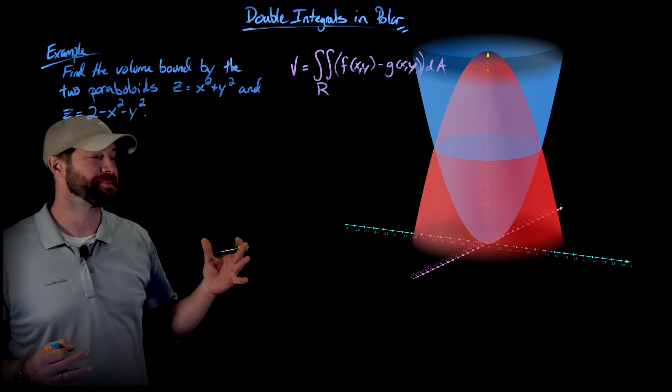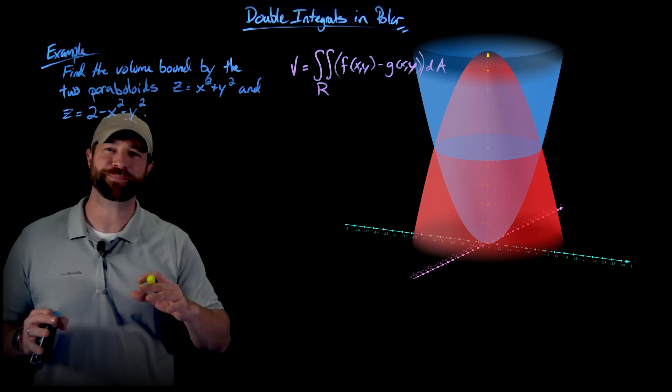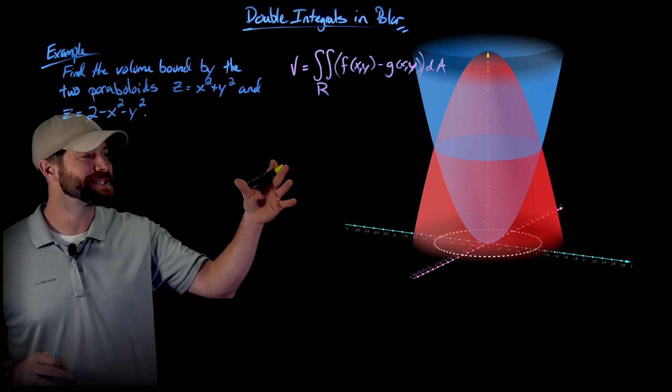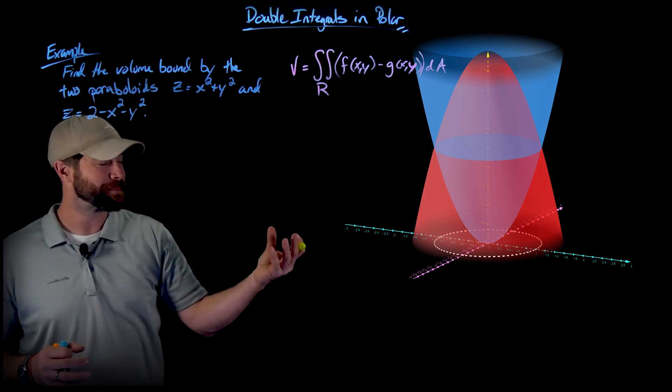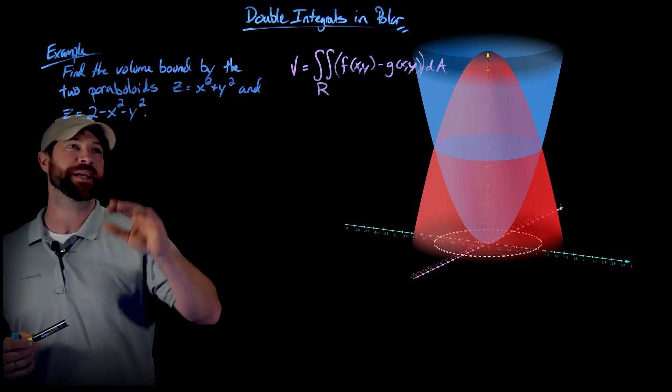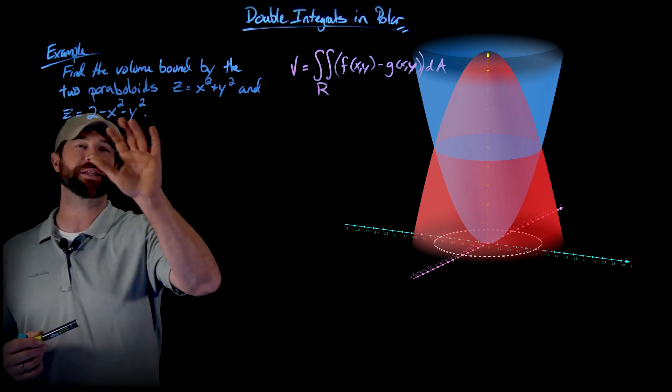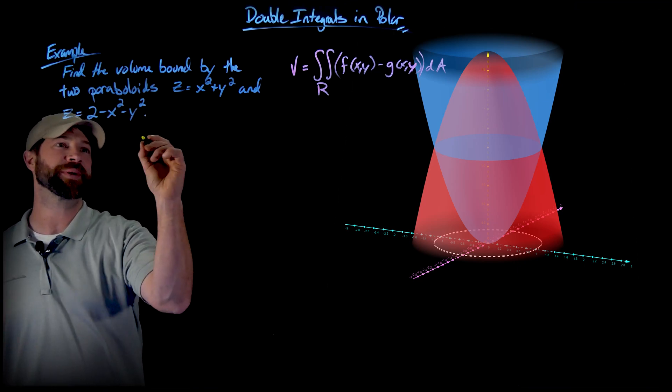So I've already let the cat out of the bag a little bit, we're going to do this in polar, that probably would be obvious. As you can see this trace where these two functions intersect is this circle that projects down on the xy plane. But if we wanted to find that algebraically, all we need to do is set these two equal to each other.